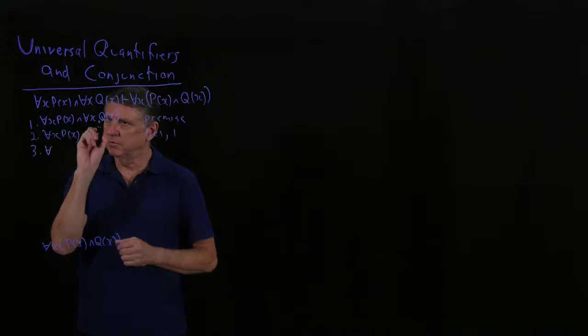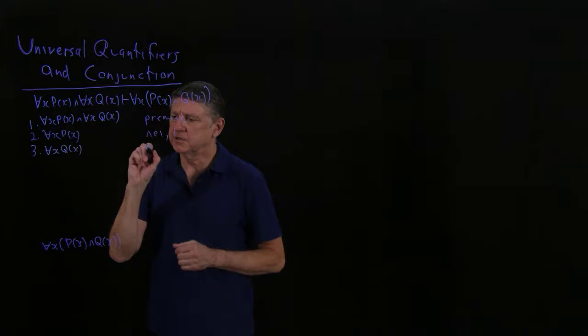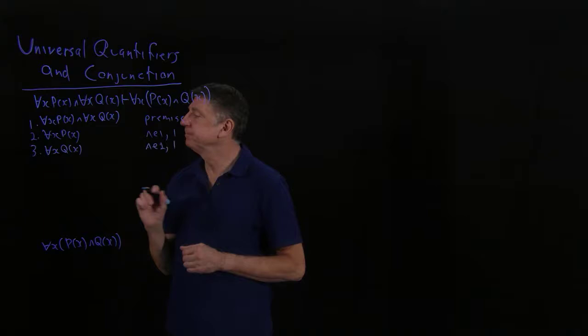And then using propositional logic, I can pull out the right conjunct. So that's for all x Q of x. So that's conjunction elimination type 2 also based on line 1.